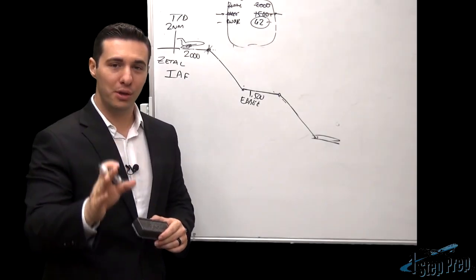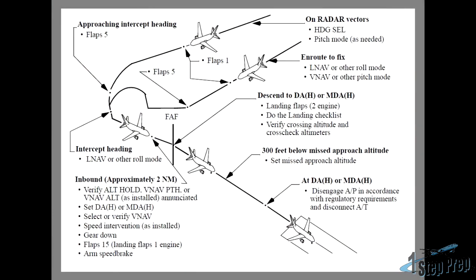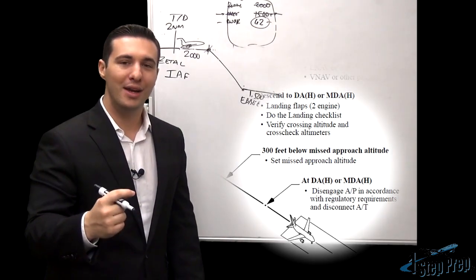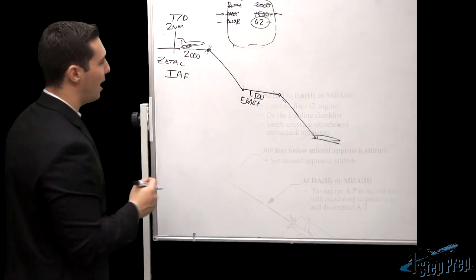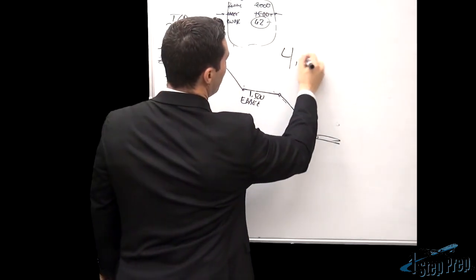Now, you heard that right. 300 feet below the missed approach altitude. We're going to overlay the maneuver section of the QRH right here on the screen so you can see where this is illustrated within the manual. And once more, let's make sense of the setting of the missed approach altitude 300 feet below the missed approach altitude.